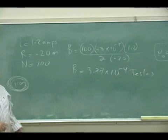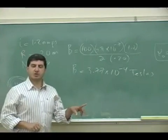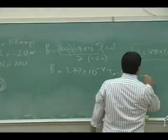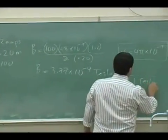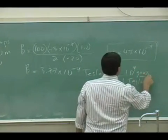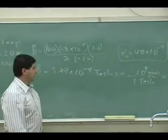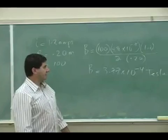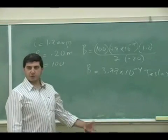By the way, sometimes this is written in the units of Gauss. It's a different unit for magnetic field. One tesla is 10 to the fourth Gauss, so it's convenient because then the 10 to the fourth cancels with 10 to the minus four.